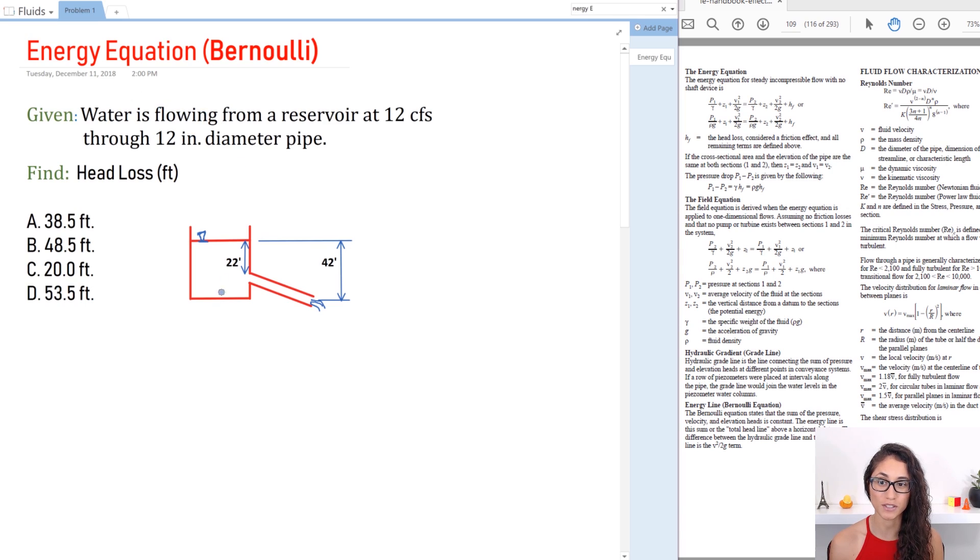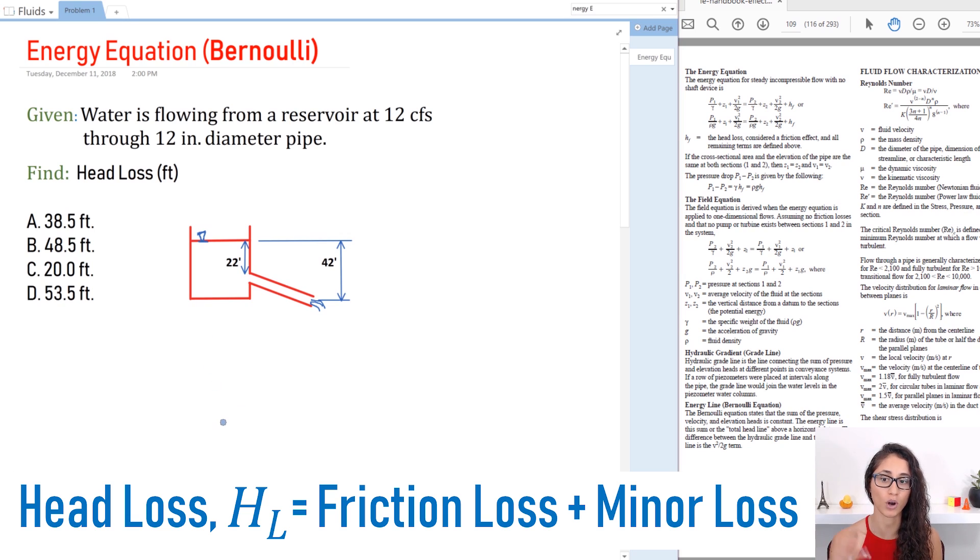So we're given water that is flowing from a reservoir at a flow rate of 12 cubic feet per second through a 12 inch diameter pipe and we need to find the head loss. Now whenever we have water that's flowing through a pipe there is always head losses either due to friction or due to the entrance of the pipe, exits of the pipe and so on. Now so we need to calculate that head loss in feet.